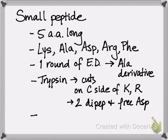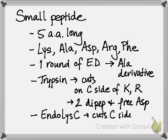You take another sample of your peptide and you treat it with a different protease called EndoLys-C. This cuts on the carbonyl side of lysine in a protein. In this experiment, it gives you a dipeptide and a tripeptide.